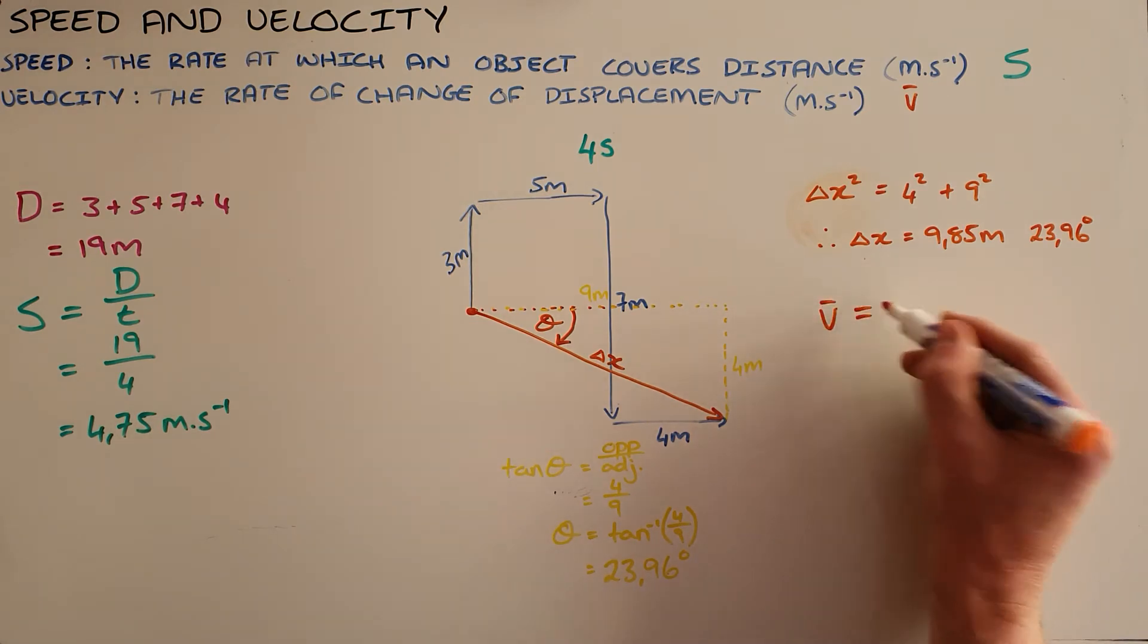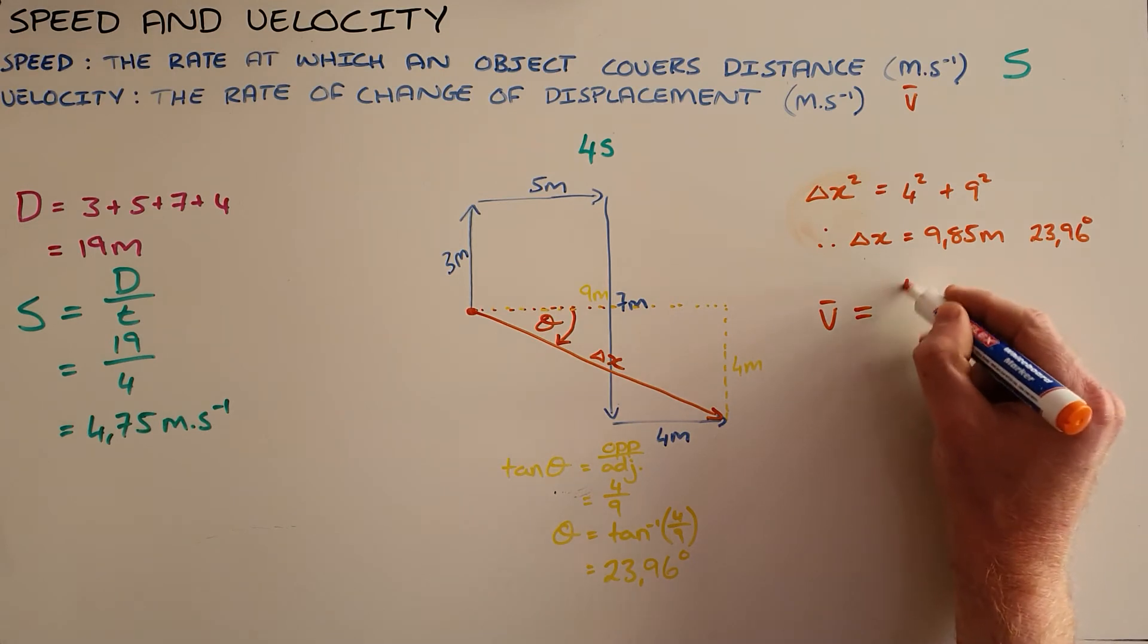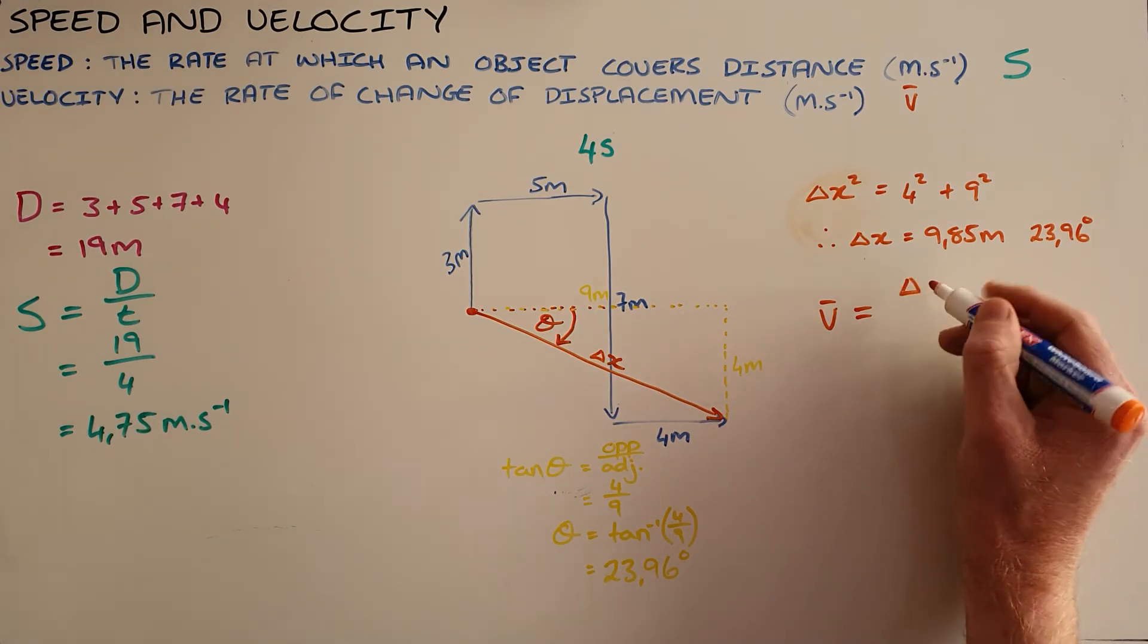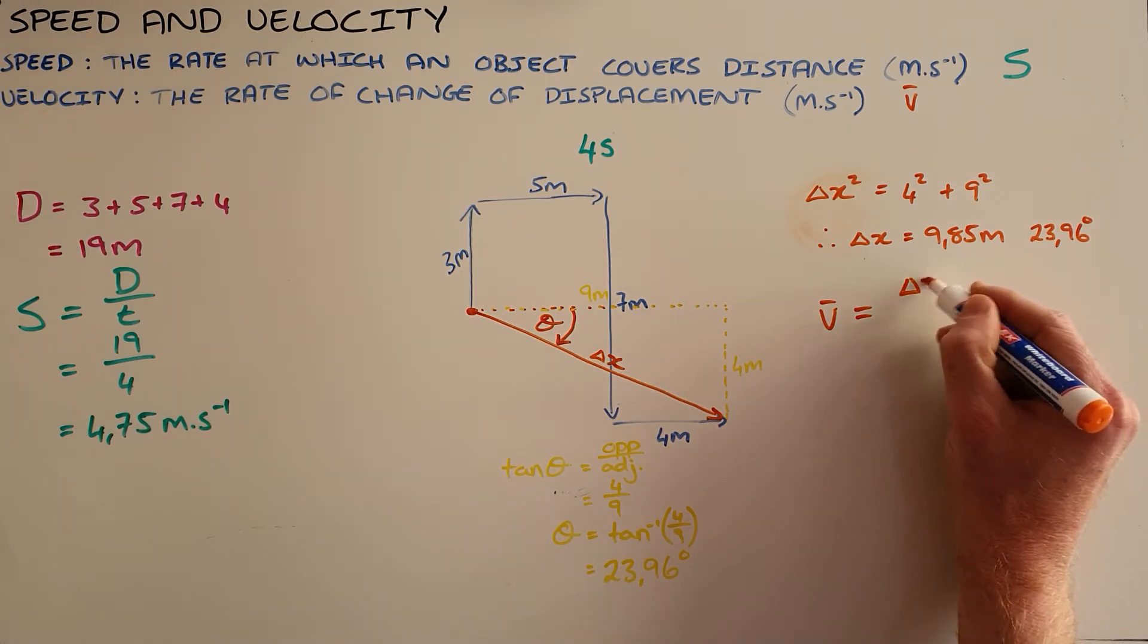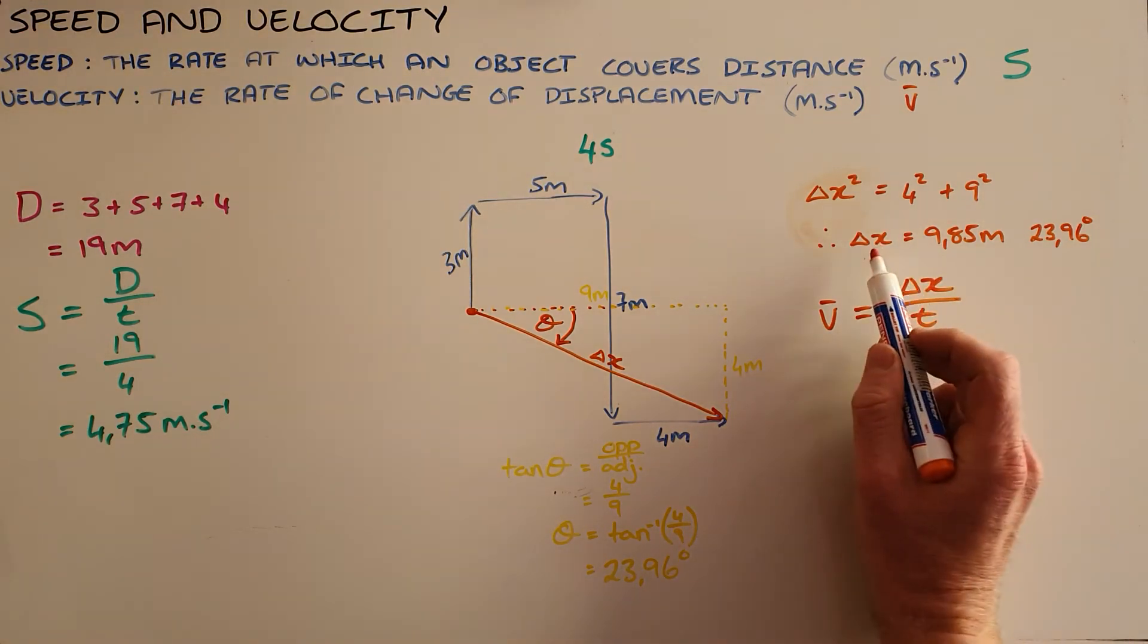In order to calculate the velocity of this object, the definition says it is the rate of change of displacement. So where speed is distance over time, velocity is displacement over time. We sometimes write displacement as delta x, meaning the change in position.